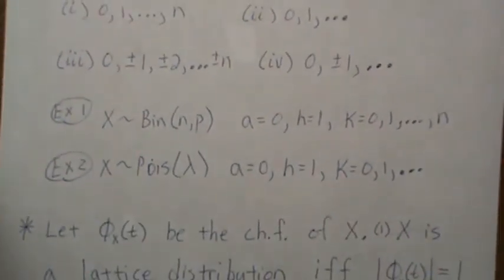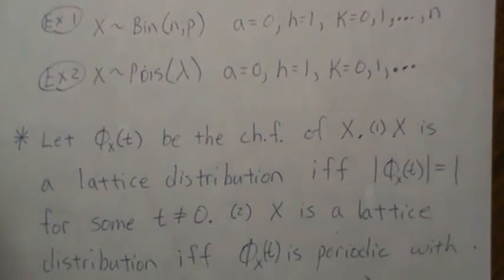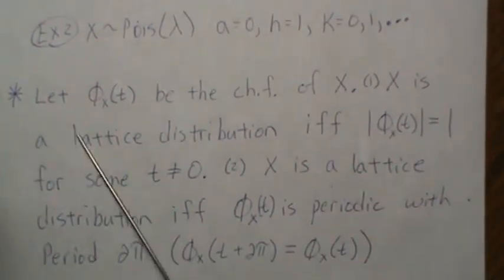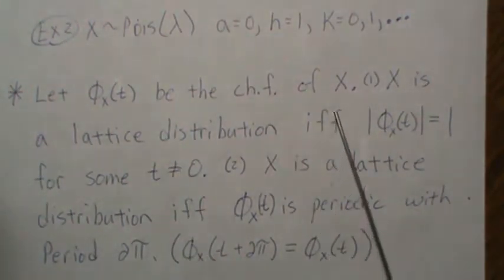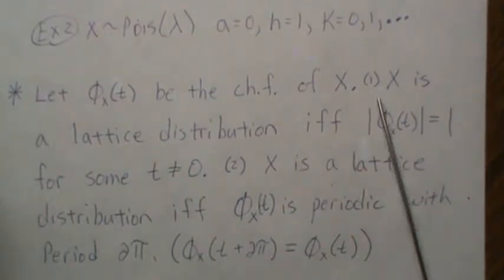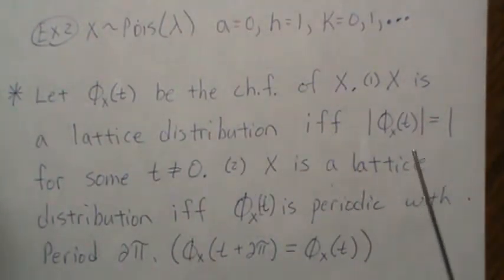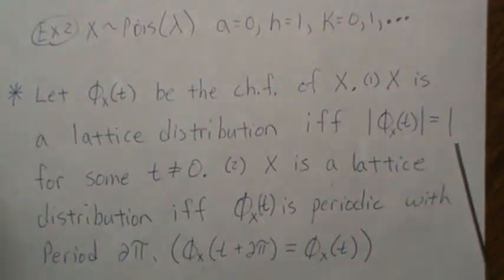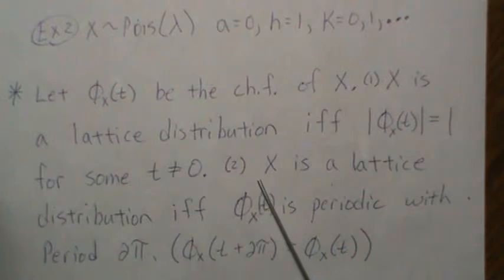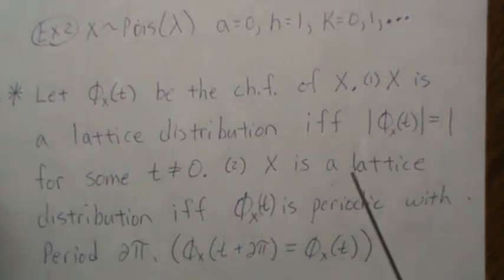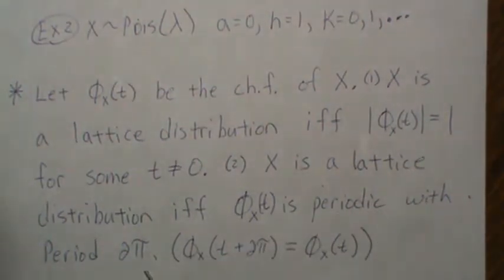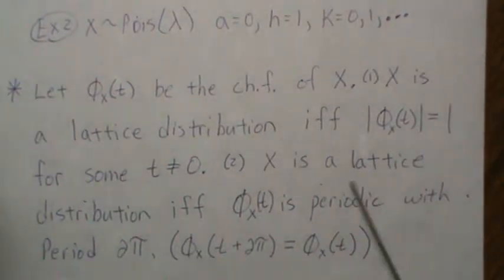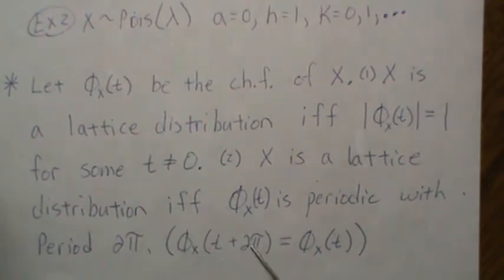Now on to our last property for this video. Let φ_x(t) be the characteristic function of x. Property 1: x is a lattice distribution if and only if the modulus of the characteristic function equals 1 for some t ≠ 0. Property 2: x is a lattice distribution if and only if the characteristic function is periodic with period 2π/h. In the interest of time, we'll only prove property 1 and come back to property 2 in a later video.